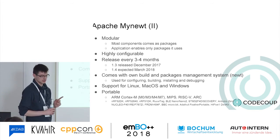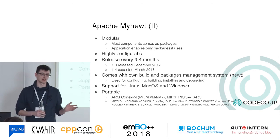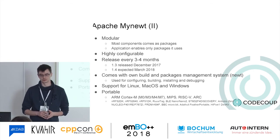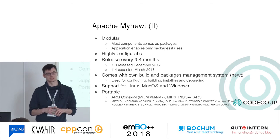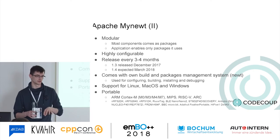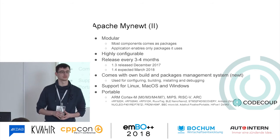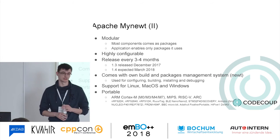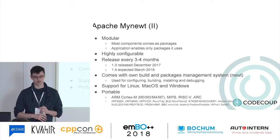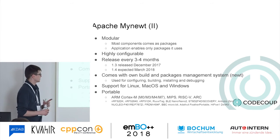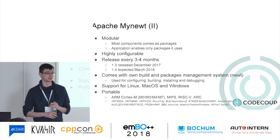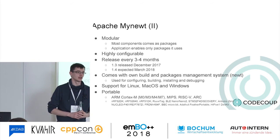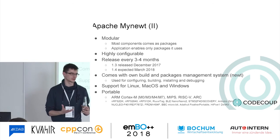The operating system is very modular — you can compile out any components you don't need to save memory. Applications enable only the features they want to use. It's highly configurable: even features themselves can be tuned. For example with Bluetooth you have configuration options to tune the stack to your needs. Releases happen every three or four months; the last release was December and the next one, 1.4, is expected in March. MyNewt comes with its own build and package management system called Newt — you don't use make or cmake by default.